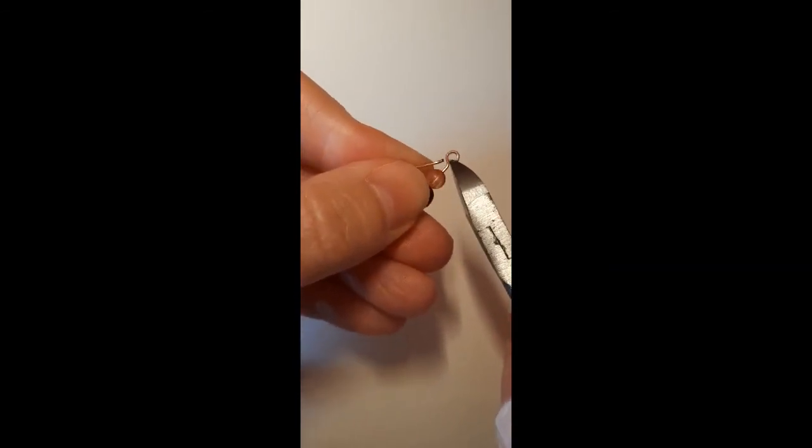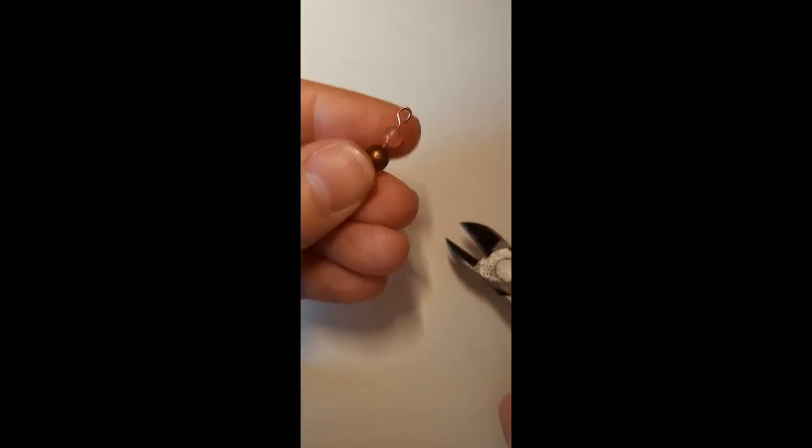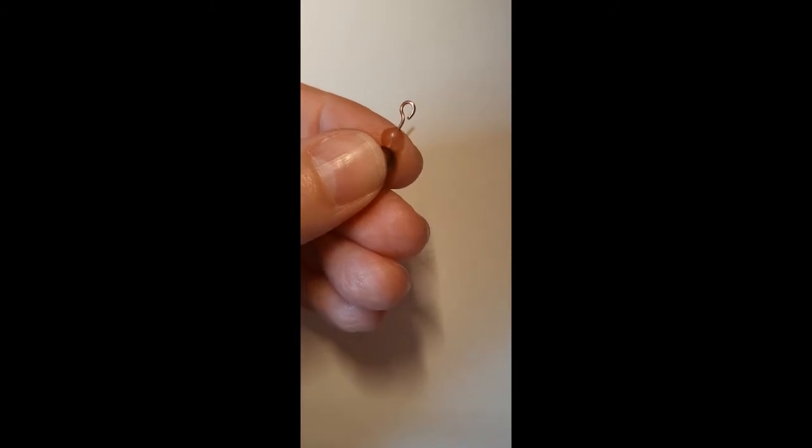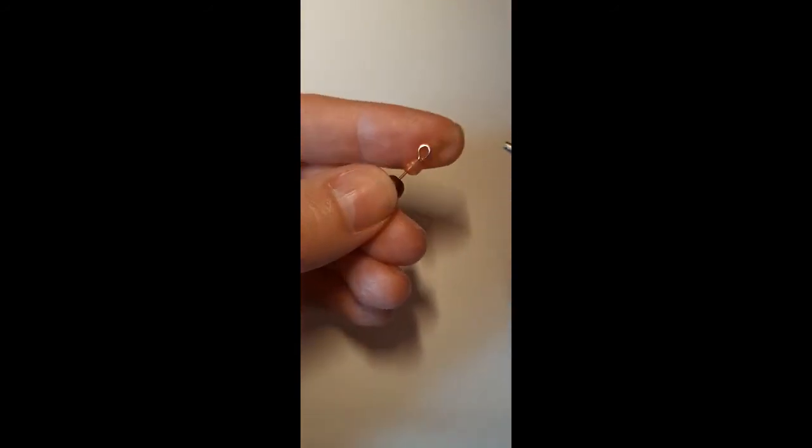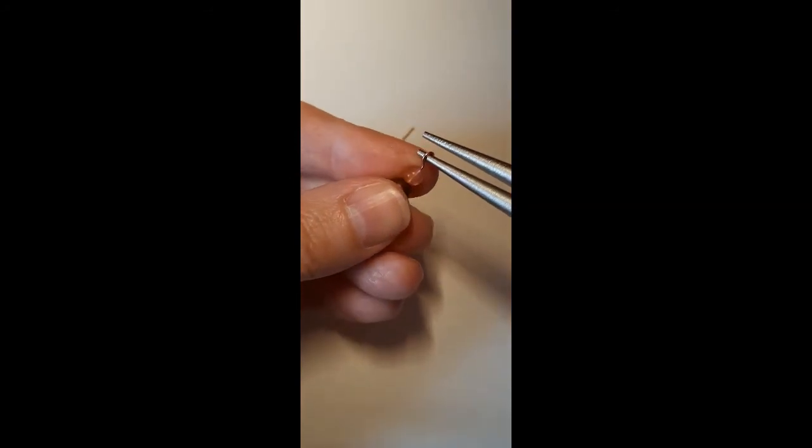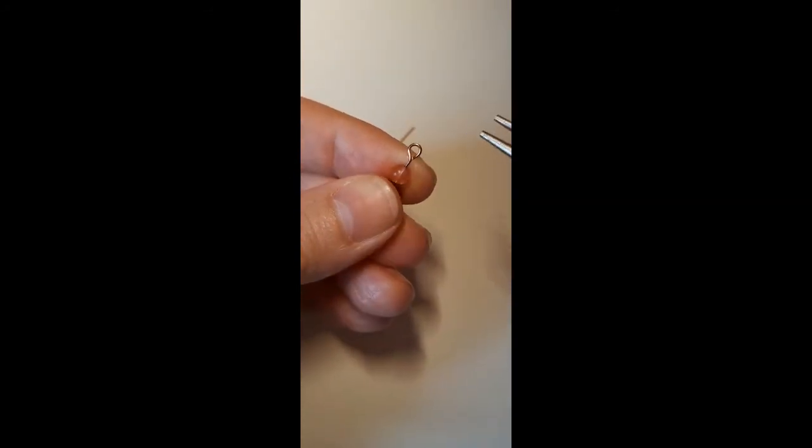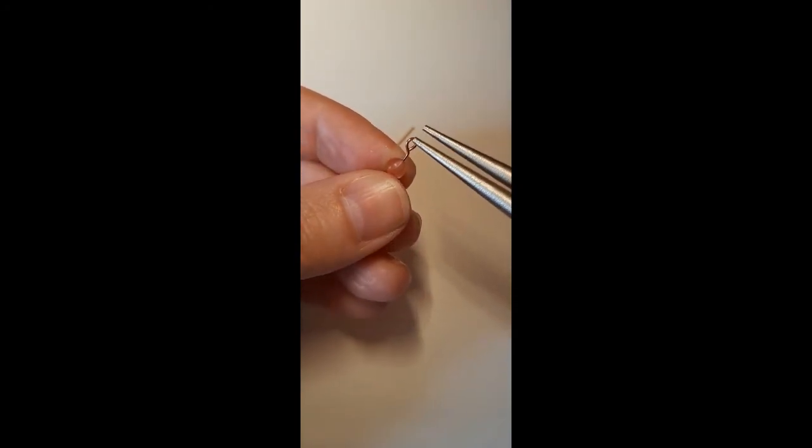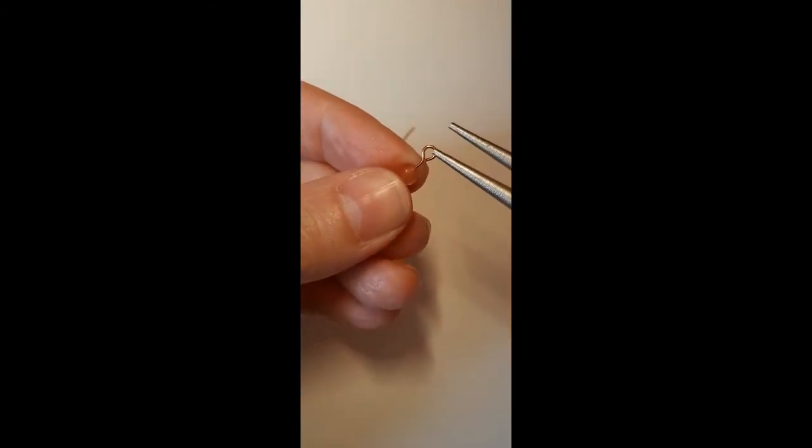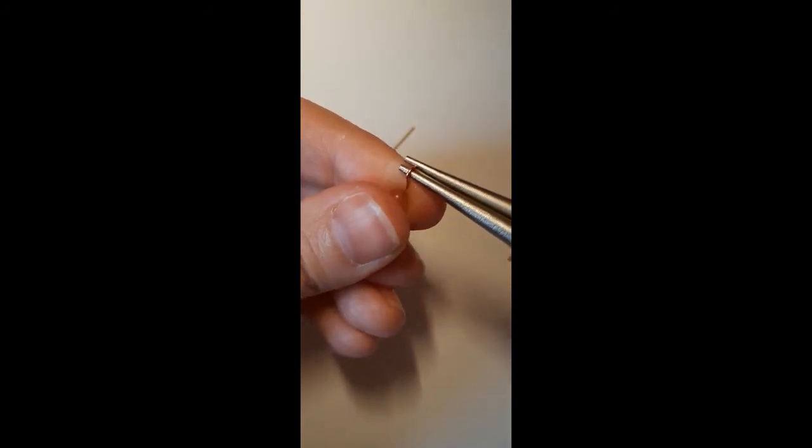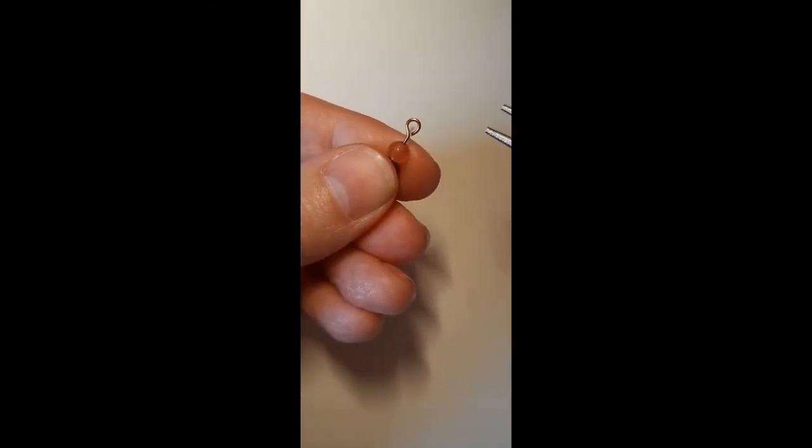You can see it's not quite a loop yet, so you need to take your round nose pliers again, put them inside the loop, and just sort of twist it closed a little bit. You put your round nose pliers into the loop, twist away from you slightly, and as you can see that's closed the loop up.